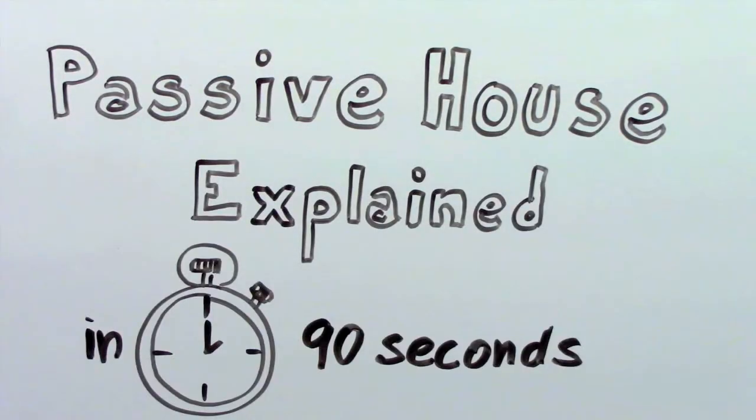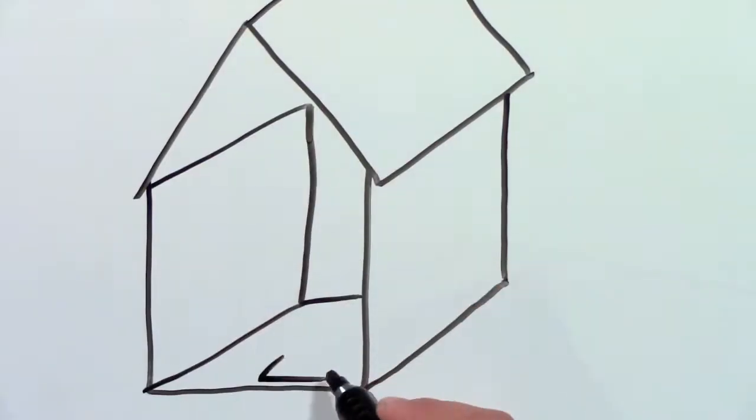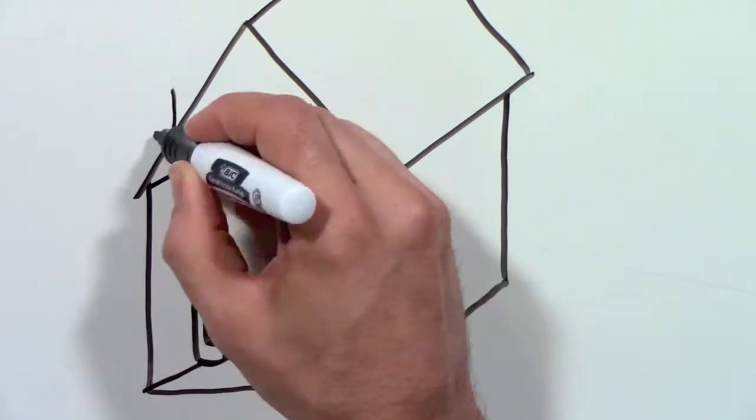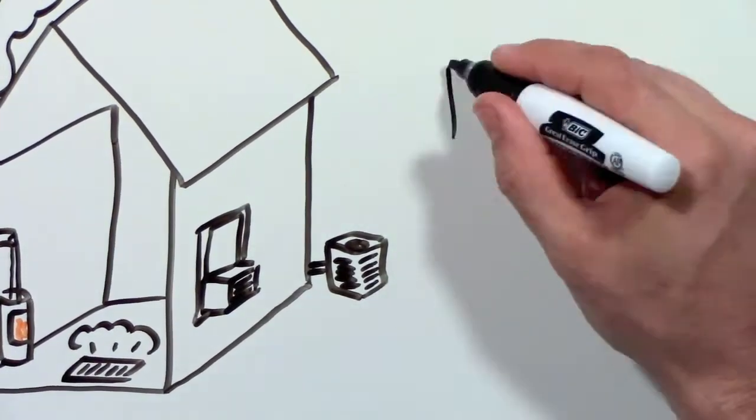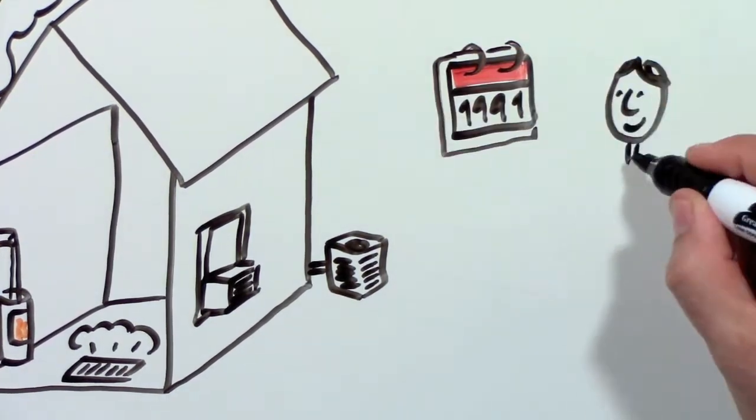Passive House explained in 90 seconds. Does your house have a heater in the basement or maybe a fireplace? Probably also a central air conditioner or maybe a window unit. Did you ever wonder if it was necessary?